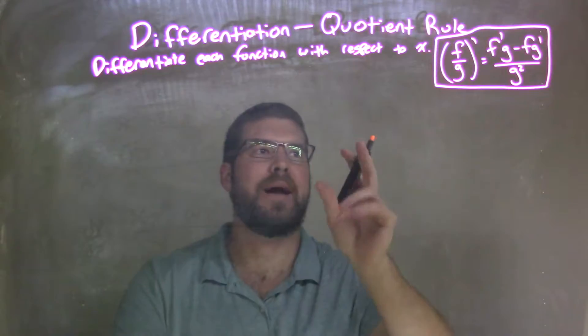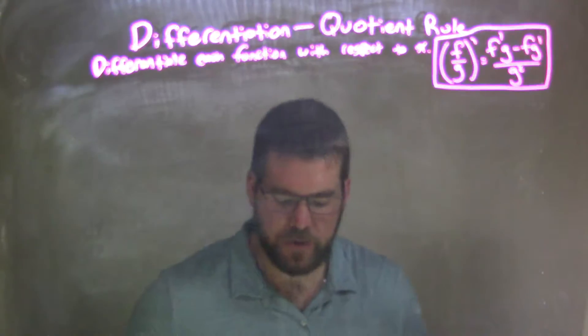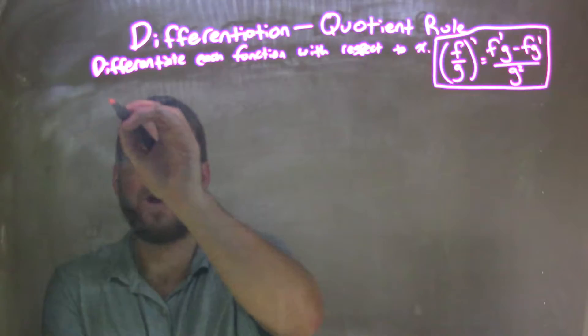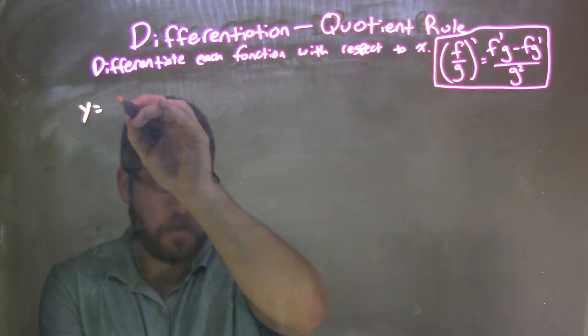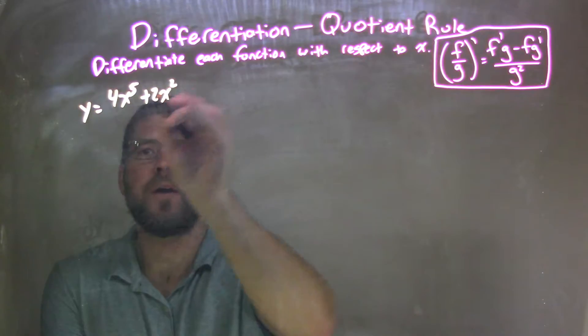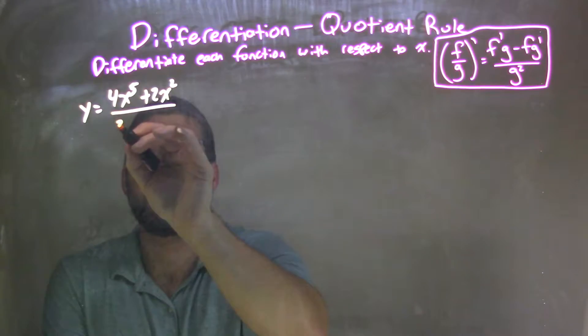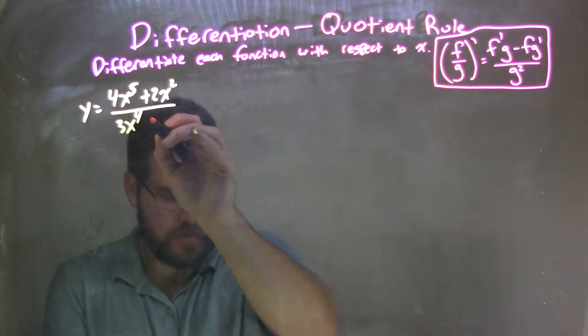We're going to differentiate each function with respect to x. So if I was given this function, y equals 4x to the fifth plus 2x squared all over 3x to the fourth plus 5.